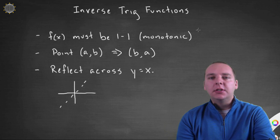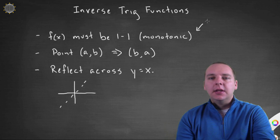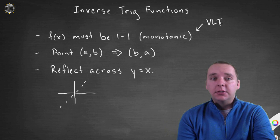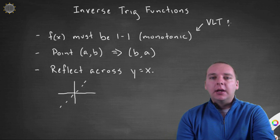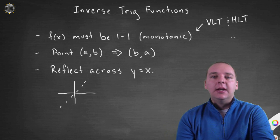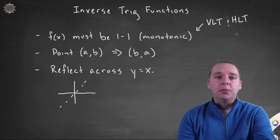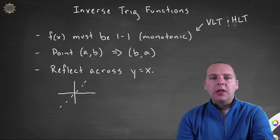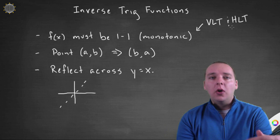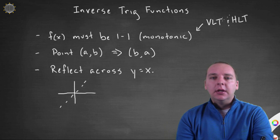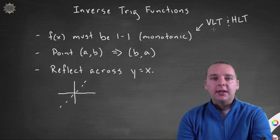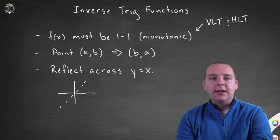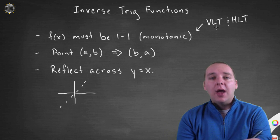Basically, one-to-one means your function passes the vertical line test — that's what's required to be a function period — as well as the horizontal line test, which is what's required to be an invertible function. You can watch our video on inverse functions to refresh your memory. You have to pass both tests for a function to have an inverse.